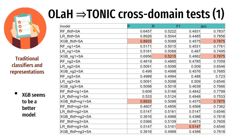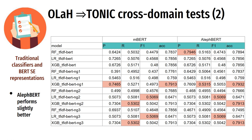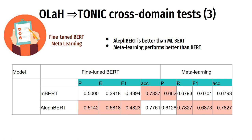Here you can see the results of the monolingual cross-domain tests, where we train and test our models on the same language, Hebrew. Once again, XGBoost is a better model than others. AlephBERT performs slightly better than XGBoost with multilingual BERT. In the monolingual cross-domain scenario, AlephBERT again outperforms multilingual BERT, and meta-learning performs better than BERT this time.